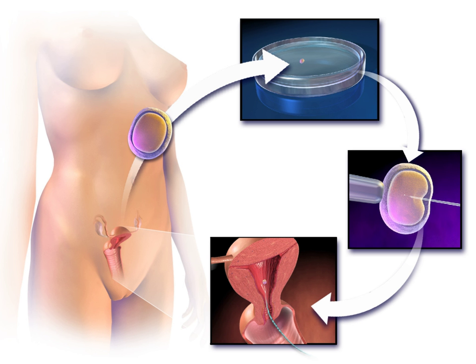Assisted reproductive technology procedures performed in the US have more than doubled over the last 10 years, with 140,000 procedures in 2006 resulting in 55,000 births. In Australia, 3.1% of births are a result of ART. In cases of discontinuation of fertility treatment, the most common reasons include postponement of treatment, physical and psychological burden, relational and personal problems, treatment rejection, and organizational and clinic problems.